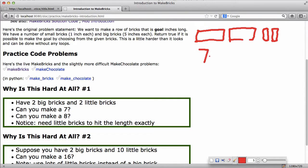All right, so the first question is, for example, could you make seven out of this? And the answer is sure. You would take one big brick and both little bricks and line them up and you could make exactly seven, so that works.